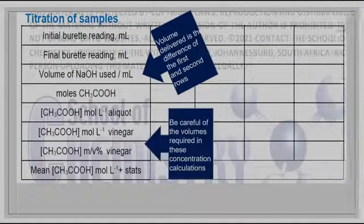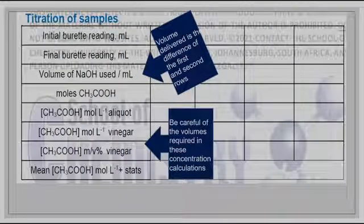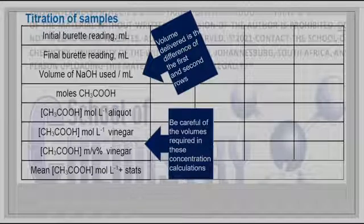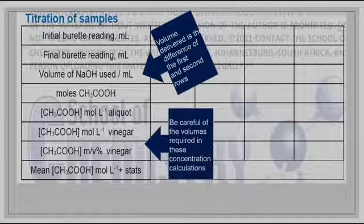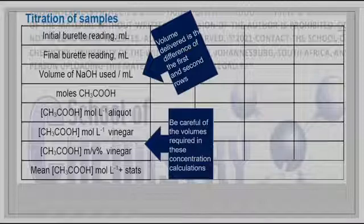In Table 2, which forms part of Part B where we are determining the concentration of acetic acid found in vinegar, we again have a trial column, analysis one, two, and three, and this table we will use to record our values. The same procedure is as previously described — we will only use analysis one, two, and three to determine our concentrations as well as our statistics. You will also use the average concentration of your sodium hydroxide to determine the exact concentration of acetic acid in vinegar.